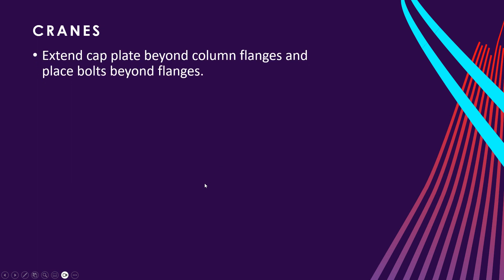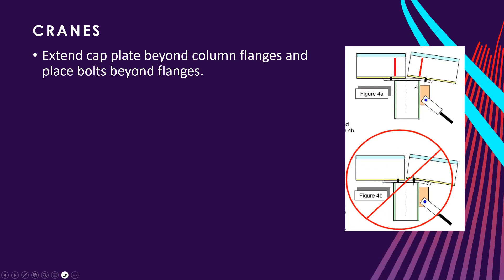You want to extend your cap plate beyond the column flanges and place bolts beyond the flanges. So here's a diagram. So here you can see where the cap plate extends beyond the flange. We put the bolt outside. We don't want to put the bolt inside the flanges of the column because it rotates. It puts undue stress on that bolt. It'll either wiggle it loose and the nut comes off or it'll just snap the bolt over time.